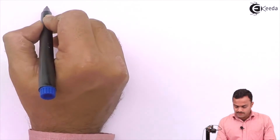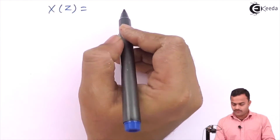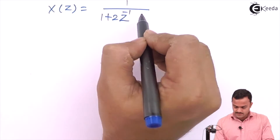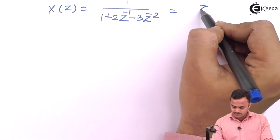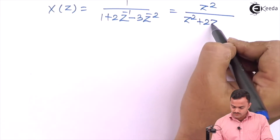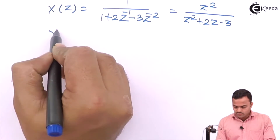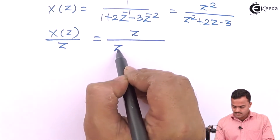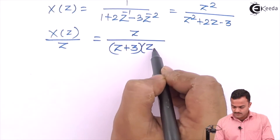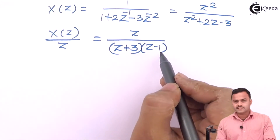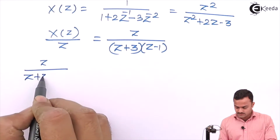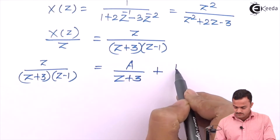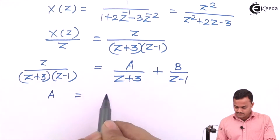Let's verify our answer by doing an inverse Z transform. Since X(z) is z² upon (z² plus 2z minus 3), we compute X(z)/z as z upon (z plus 3)(z minus 1) and perform partial fraction decomposition: A upon (z plus 3) plus B upon (z minus 1). A is obtained by putting z equal to minus 3, giving minus 3 upon (minus 3 minus 1), which is 3/4.